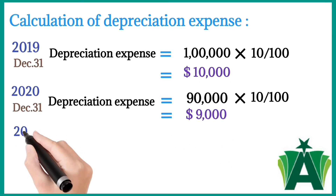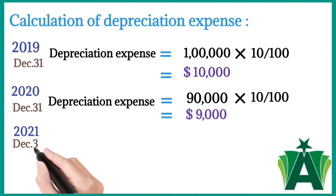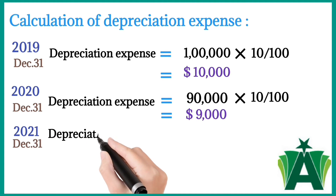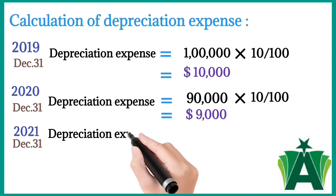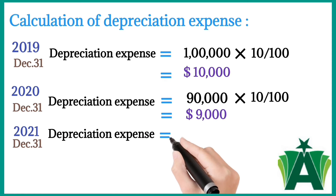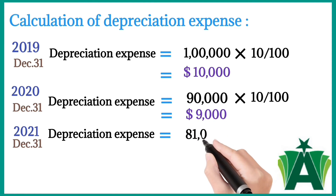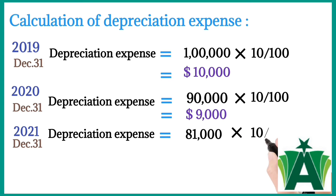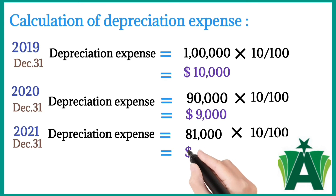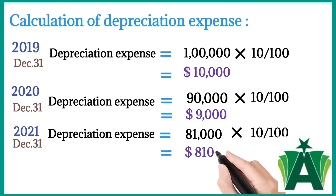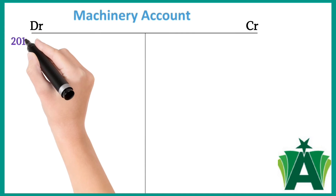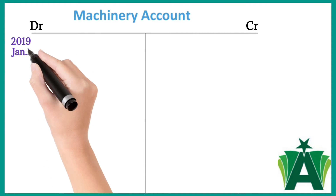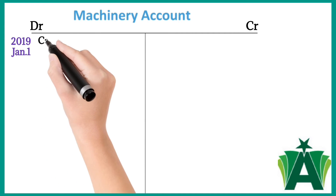At the end of 2021, December 31st, the depreciation expense is calculated on the opening balance of machinery of 81,000 at a rate of 10%, giving a depreciation amount of 8,100.